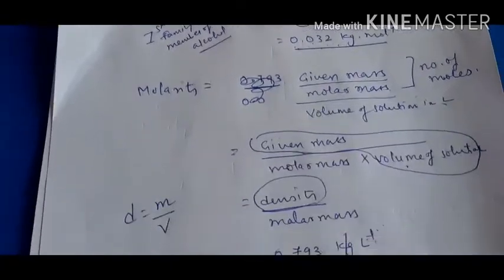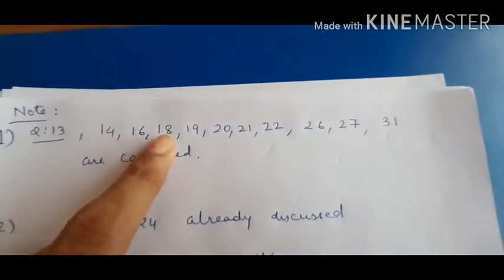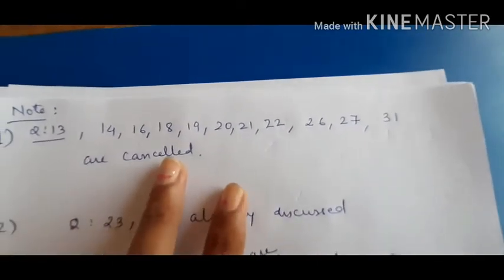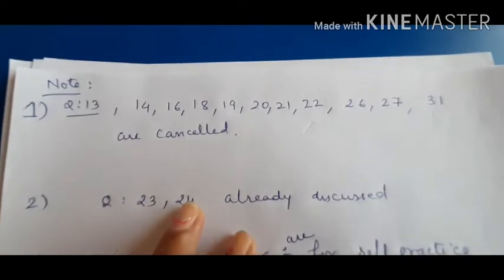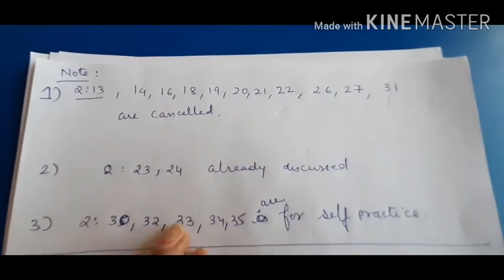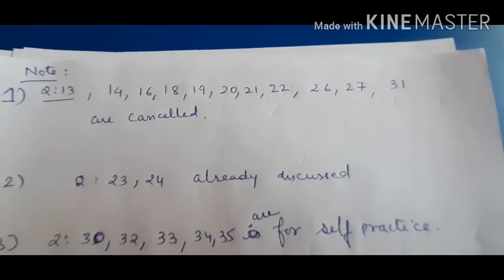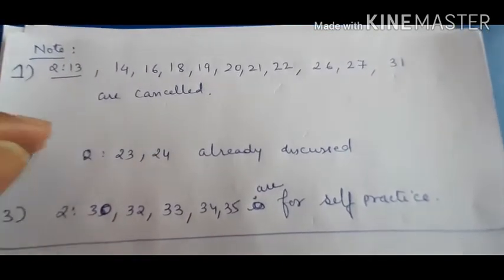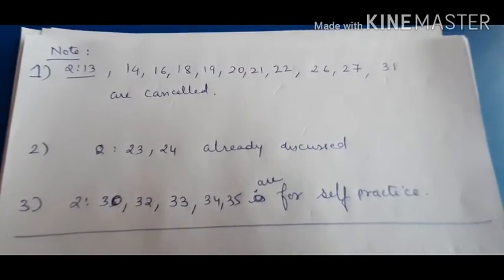Note: Questions 13, 14, 16, 18, 19, 20, 21, 22, 26, 27, and 31 are cancelled due to excluded syllabus. Questions 23 and 24 on limiting reagent were already discussed in the explanation part. Questions 30, 32, 34, and 35 are self-practice questions to be solved at home — the solutions will be shared in the next upcoming lecture. Now we move to question number 17, the last question for today.